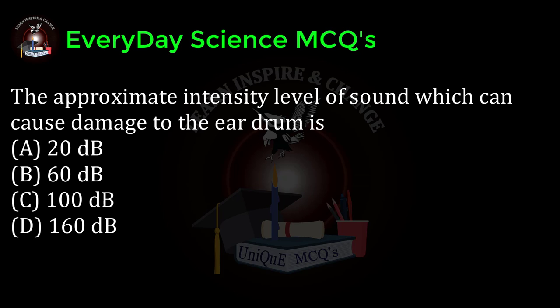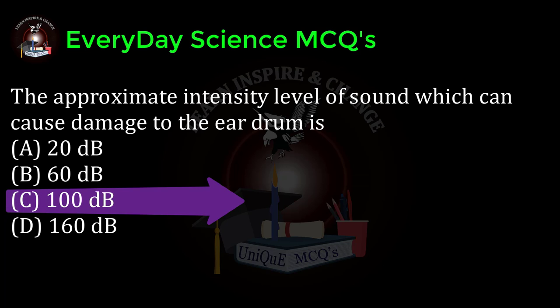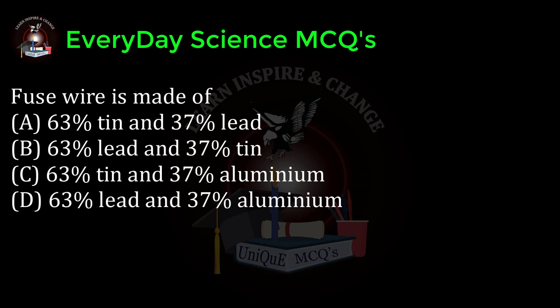The approximate intensity level of sound which can cause damage to the eardrum is: a) 20 dB, b) 60 dB, c) 100 dB, d) 160 dB. Correct answer: d.